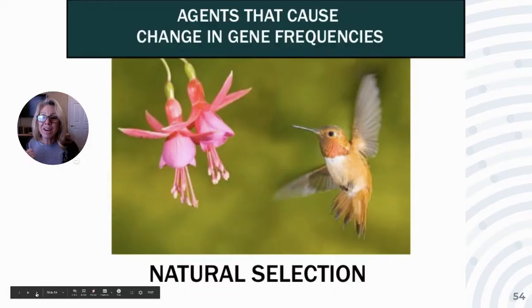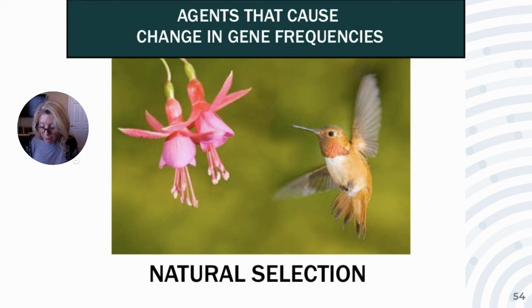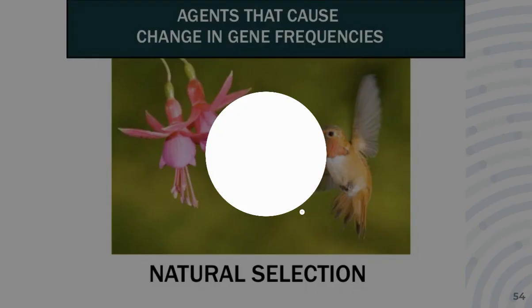The fifth and final factor is natural selection. Some phenotypes have a reproductive advantage — their traits will be passed on while others will not. Natural selection is the foundation for Darwin's theory of evolution.